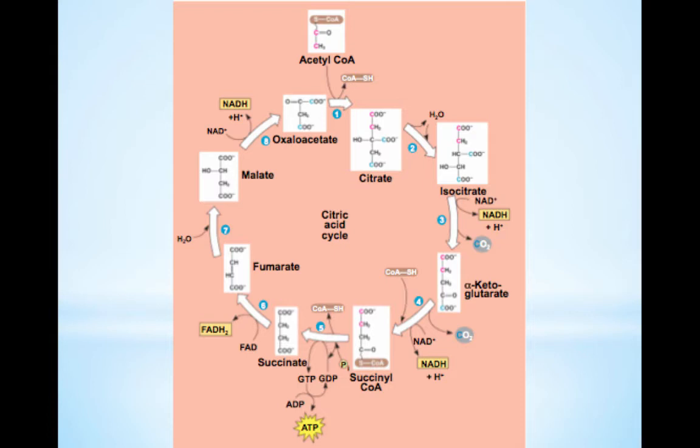Compared to glycolysis, the Krebs cycle has big energy dividends. Each turn of the cycle makes one ATP by substrate-level phosphorylation. It also produces three NADHs and one FADH2 — energy-rich hydrogen carriers. Since two acetyl coenzyme A's from two pyruvic acids go through the cycle, one glucose yields two ATPs, six NADHs, and two FADH2s from the Krebs cycle. This is a much higher energy yield than glycolysis.